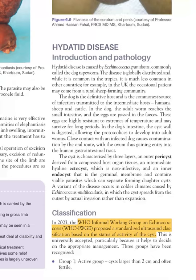The cyst is composed of three layers: the pericyst, caused by the host inflammatory response; the ectocyst, the outer laminated layer which is non-infective; and the endocyst, which consists of germinal epithelium and protoscolices.